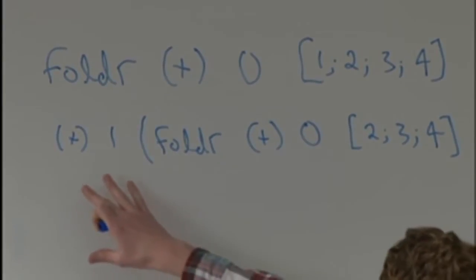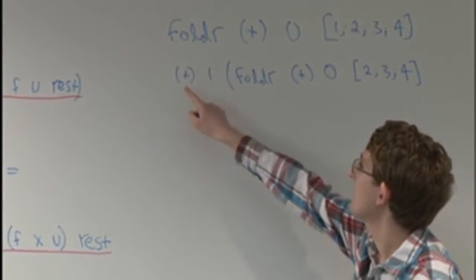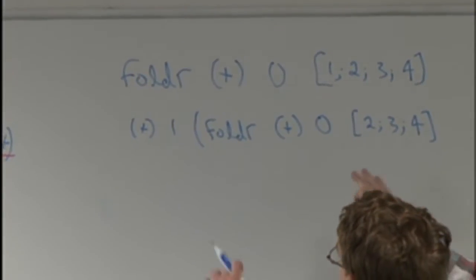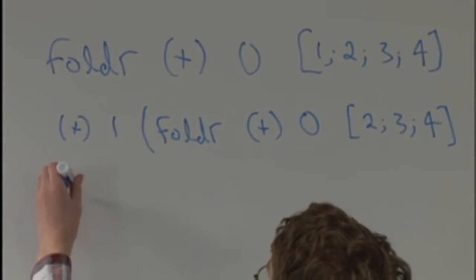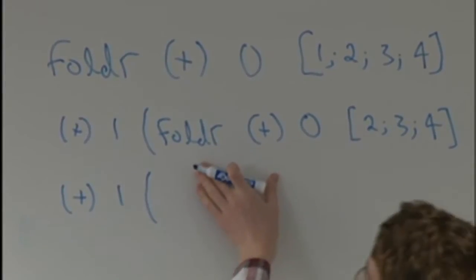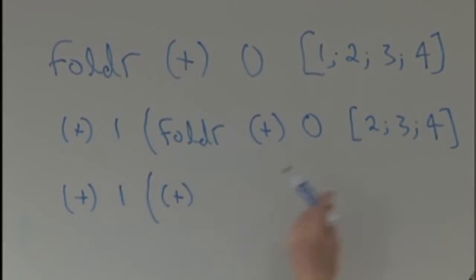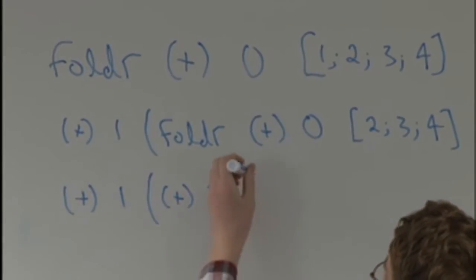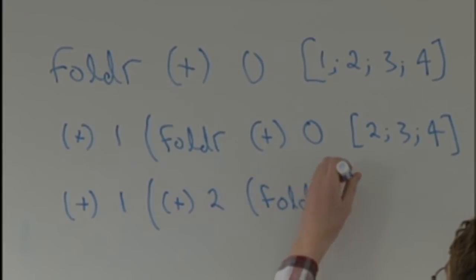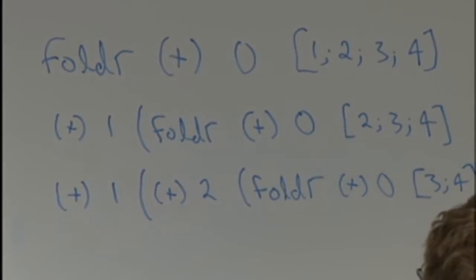What we're starting to see is that we're building up deferred function calls. Before we can evaluate the outer plus, we have to evaluate another fold right. So this ends up being plus one of — we evaluate this fold right — and that gives us f being plus, x now being two (the new head of the list), and then the recursive call: fold right of plus, zero, and the rest which is now just three and four.